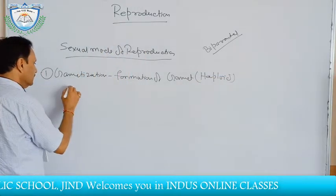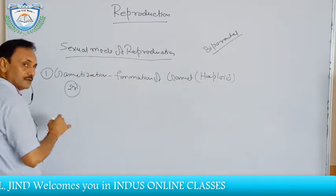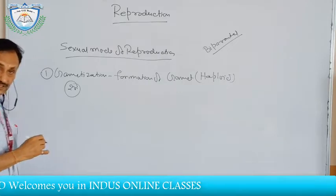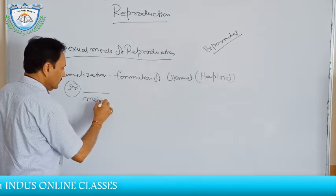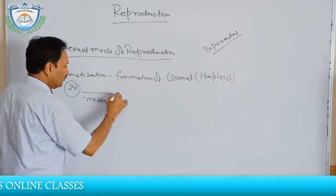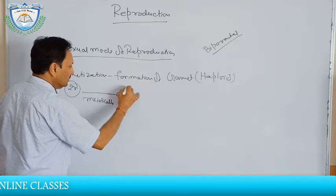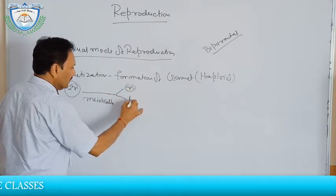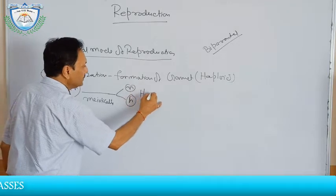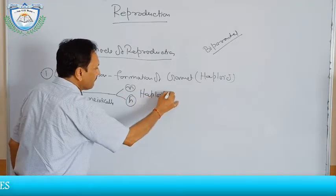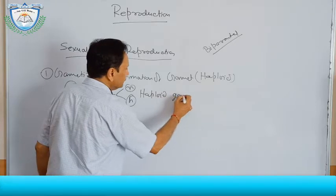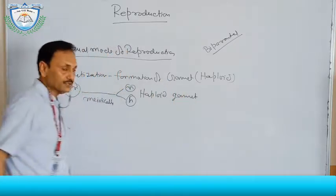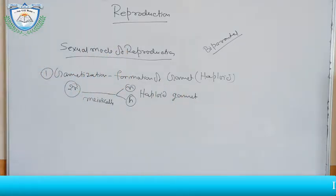It means the diploid mother cell divides meiotically to produce haploid gametes. This is the first step of the sexual mode of reproduction: gametogenesis.